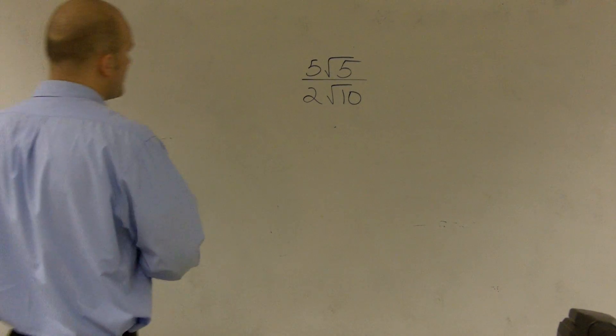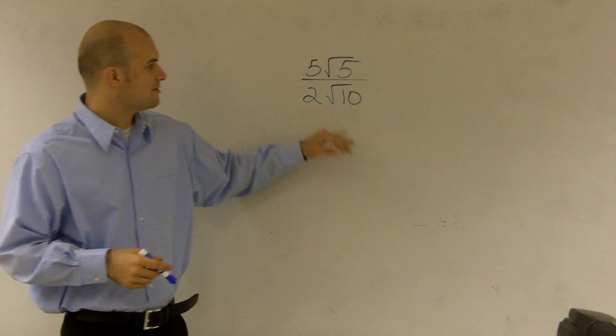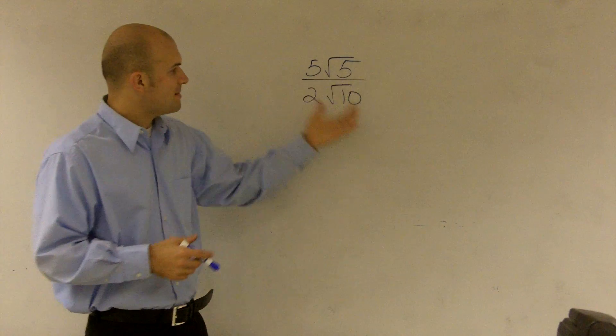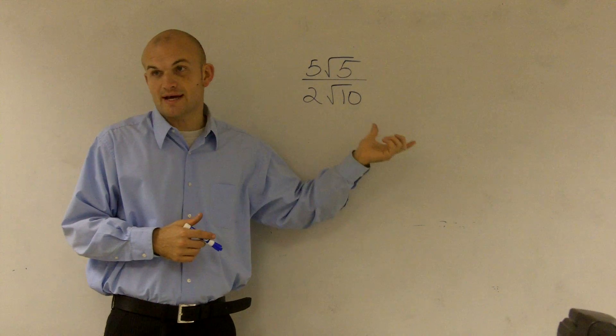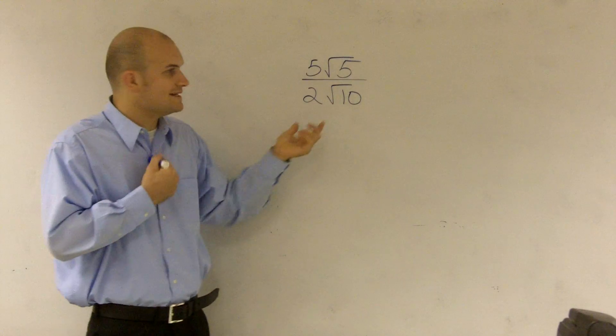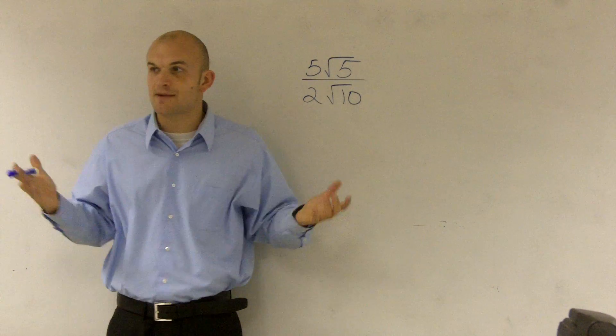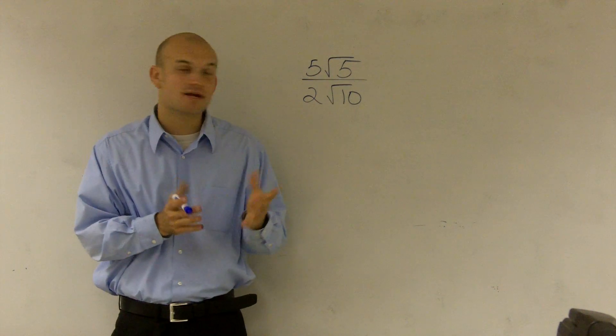So if I want to simplify this rational expression, the main thing I want to do is I need to get rid of that square root of 10. So I need to multiply by square root of 10 because you can't divide by square root of 10 because the square root of 10 is an irrational number.